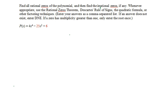Here we're going to find all the real zeros of the polynomial P(x) = 4x^4 - 25x^2 + 6 using all of the tools that we have been studying.